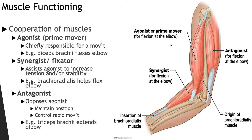You can have the agonist, which is the muscle that provides the major force for producing a specific movement, also known as the prime mover. You can have the antagonist, which is the muscle that opposes or reverses a particular movement. You can have synergists, which are muscles that help prime movers by adding extra force to the same movement or reducing undesirable movements. And you have fixators, when synergists immobilize a bone or a muscle's origin.